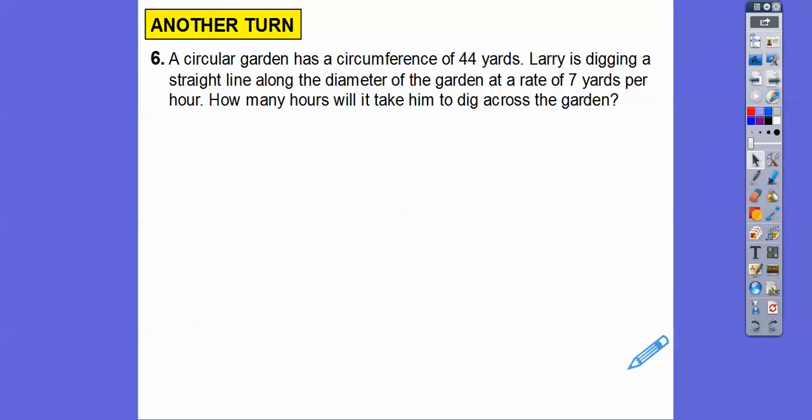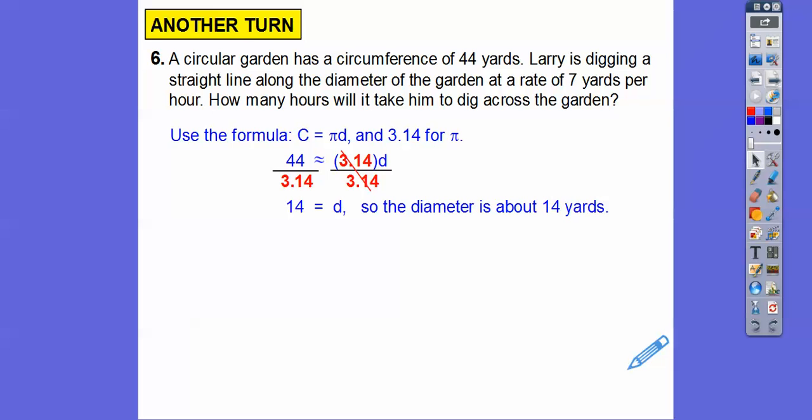All right, let's do another one. So a circular garden has circumference of 44 feet. Larry's digging a straight line along the diameter. So this is where we're going to go. Circumference equals diameter times pi. It's either two pi r or pi times diameter. And then the garden at a rate of seven yards per hour. So same problem, except we're going to use the pi times diameter formula. Use 3.14. So we're going to divide by 3.14 and we get the diameter to be 14. And since it's going seven yards per hour, then we're going to do,